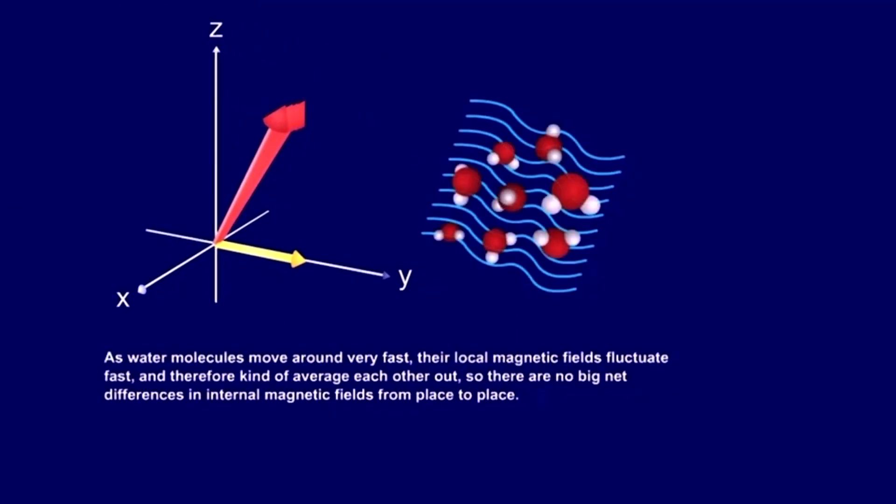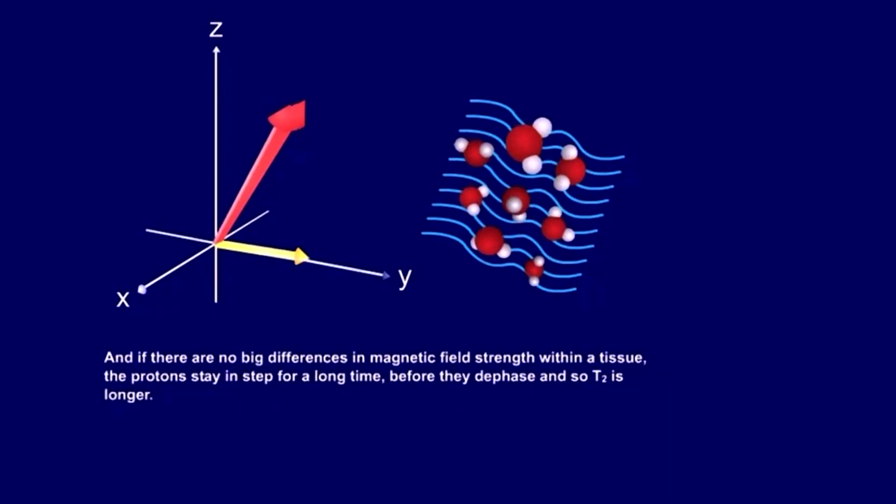As water molecules move around very fast, their local magnetic fields fluctuate fast and therefore kind of average each other out. So there are no big net differences in internal magnetic fields from place to place. And if there are no big differences in magnetic field strength within a tissue, the protons stay in step for a long time before they dephase, and so T2 is longer.